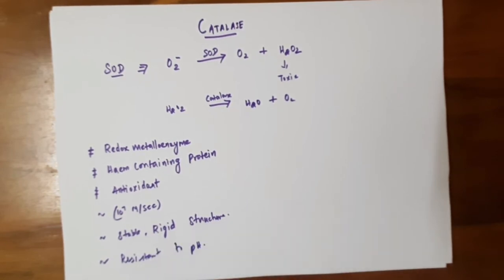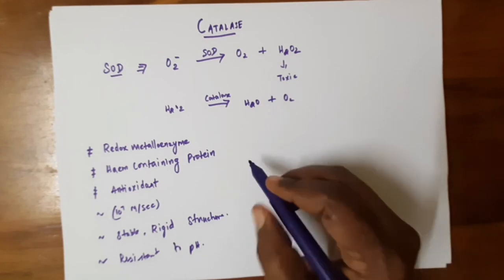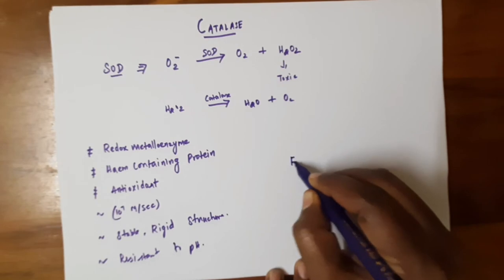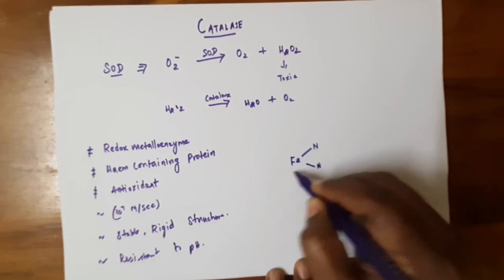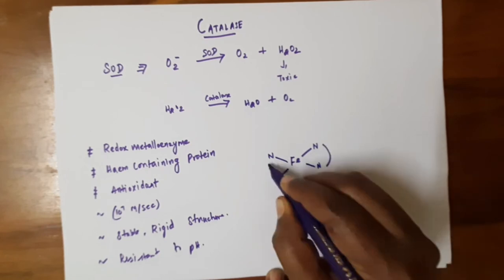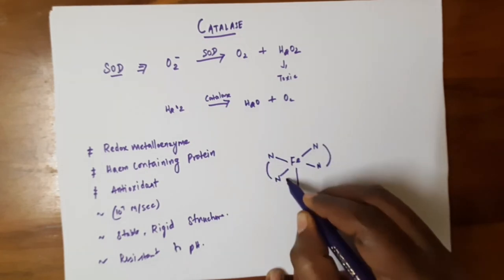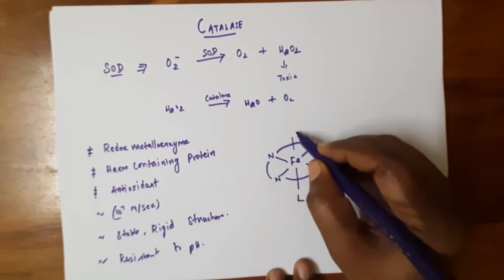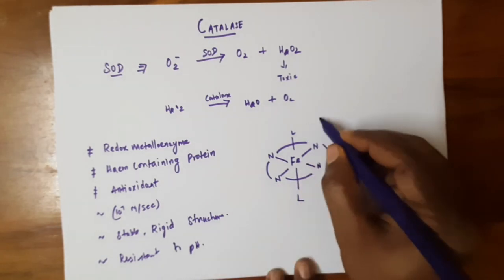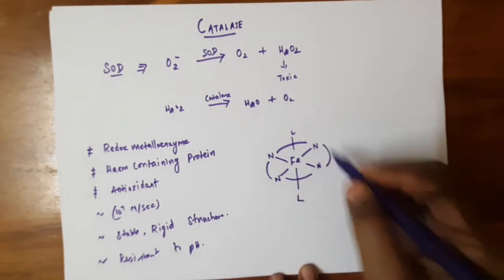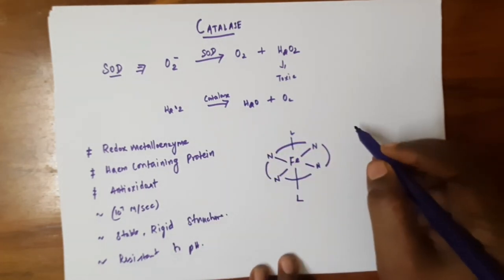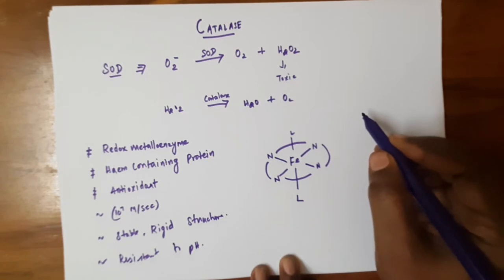Looking at the structure, catalase is a heme-containing, iron-containing protein. The iron is coordinated with four nitrogen atoms of four porphyrin rings, and above and below there are axial ligands — histidine and arginine groups. This is the structure of catalase, and there are two types of steps involved in the mechanism.